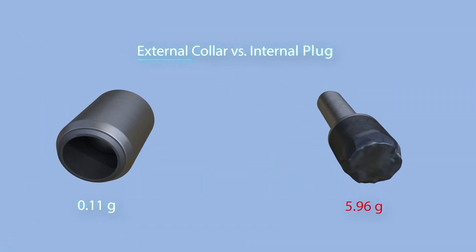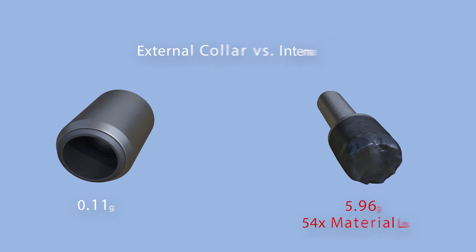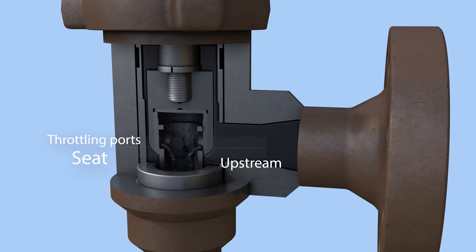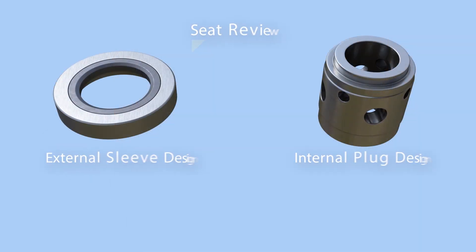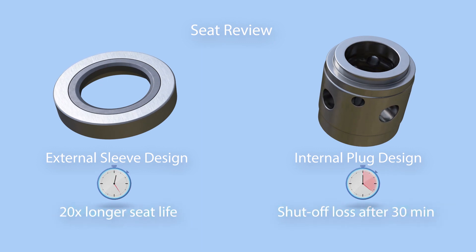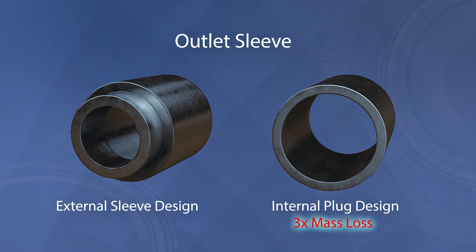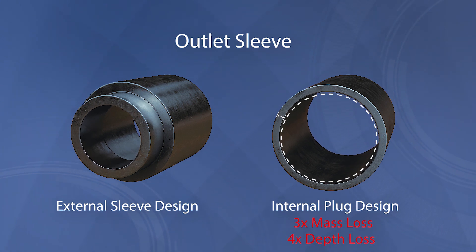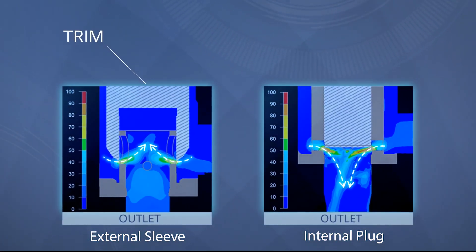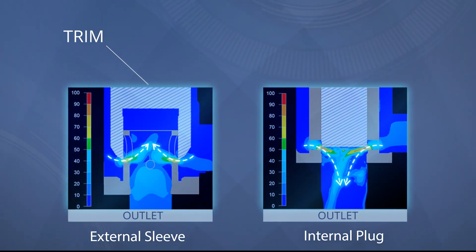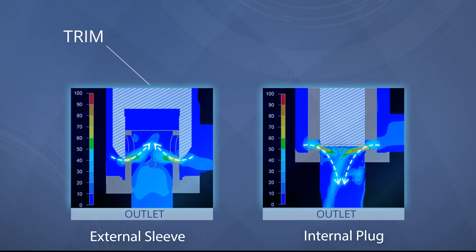When the engineers compared the external sleeve to the internal plug, they observed that the plug lost 54 times more material. By placing the seat upstream of the throttling ports, the external sleeve valve was able to maintain shutoff capability by the end of testing and showed 20 times longer seat life than that of the internal plug design. Also, the material loss of the outlet sleeve was 3.2 times higher, and the depth loss was 4 times larger in the internal plug valve. This was explained by the CFD analysis that showed high-velocity fluid jets in the internal plug were directed into the outlet. By contrast, in the external sleeve valve, they were directed towards the valve trim, away from the outlet.